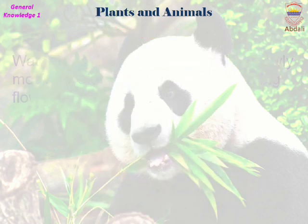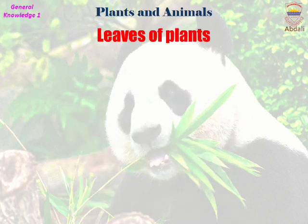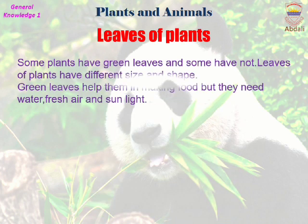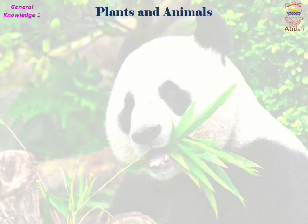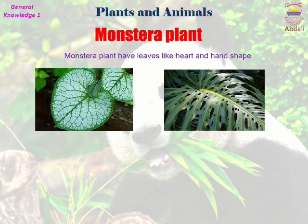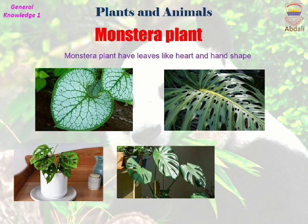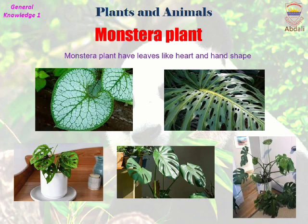There are so many tiny green flowers on a rice plant. Some plants have green leaves and some do not. Leaves of different plants come in different sizes and shapes. The monstera plant has leaves that are shaped like big, green hearts or hands. They have lots of holes and splits in them, making them look like slices of Swiss cheese. The leaves are smooth and shiny, and they grow on long, sturdy stems.